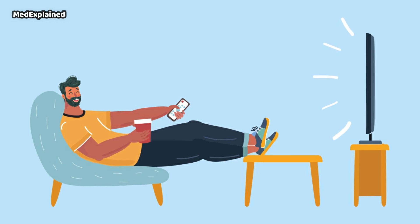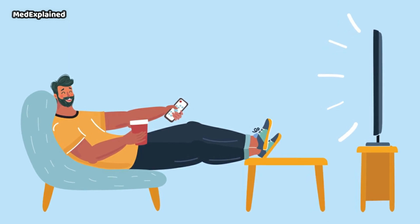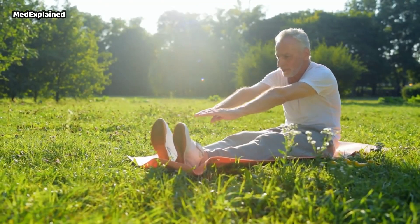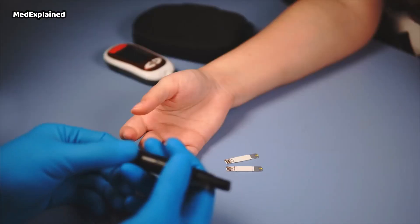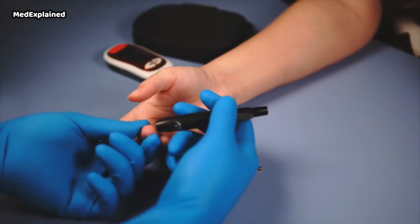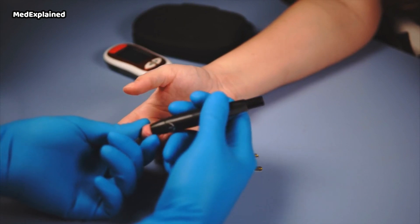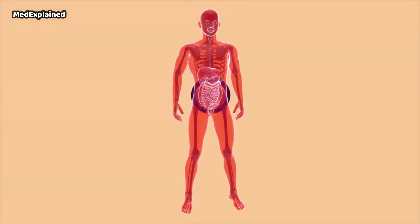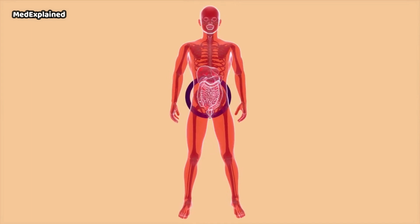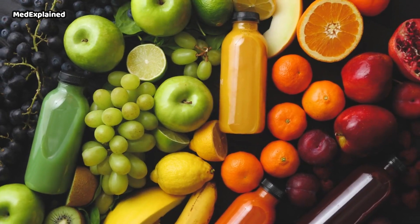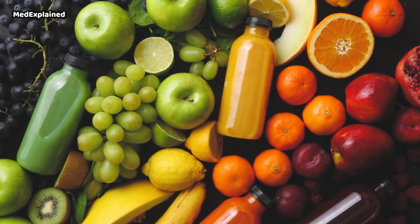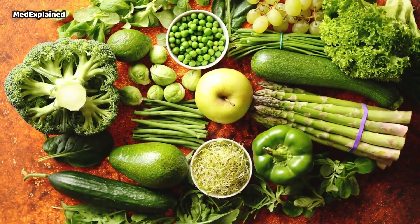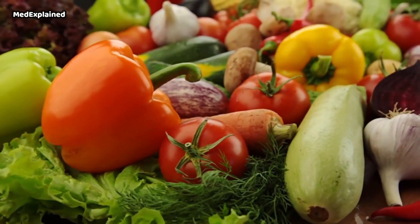A sedentary lifestyle increases risk — people who are inactive are more likely to develop colon cancer, and regular physical activity may reduce your risk. People with diabetes or insulin resistance also have an increased risk. You can take steps to reduce your risk by making changes in your everyday life. Eat a variety of fruits, vegetables, and whole grains, which contain vitamins, minerals, fiber, and antioxidants that may play a role in cancer prevention.